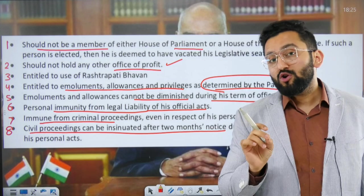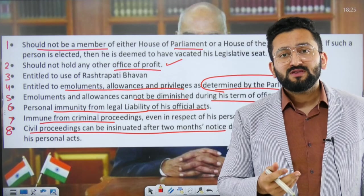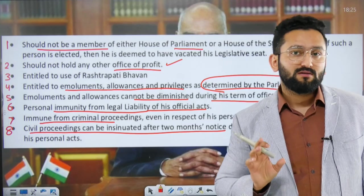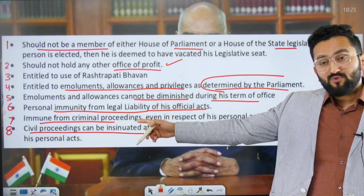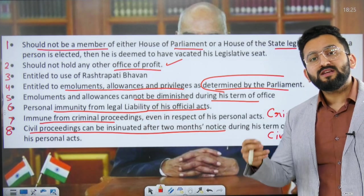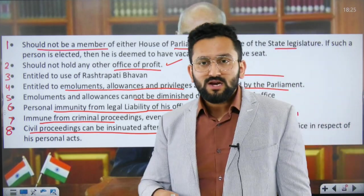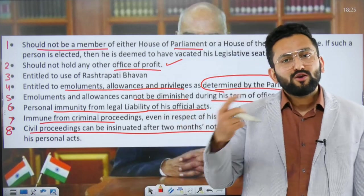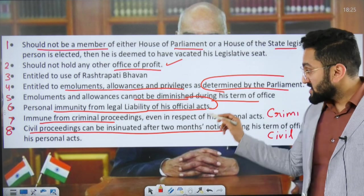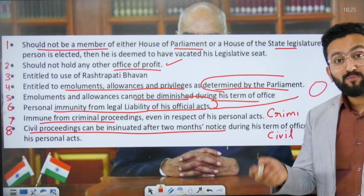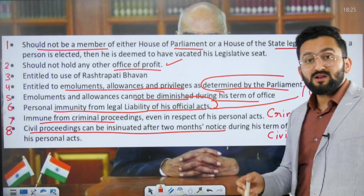Regarding conditions of office: the President should not be a member of either house of Parliament. Remunerations and allowances cannot be diminished during the tenure. Personal immunity is provided — for all official acts, you cannot be dragged into court. For example, if you are signing a file on the advice of the Council of Ministers, you get immunity for all official acts.